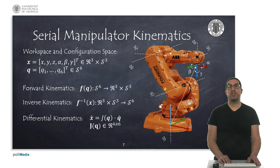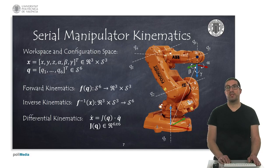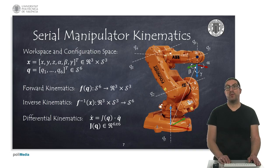The Jacobian matrix of the robot is obtained from the partial derivatives of the forward kinematics model with respect to Q, the robot joints. This is a six-by-six matrix that allows obtaining the end-effector speeds from current configuration Q and joint speeds Q-dot. The matrix can be singular, which means that at singular configurations the rank of this matrix will be less than six, and therefore there will be a direction that is blocked. This is something we will study later in a different video.